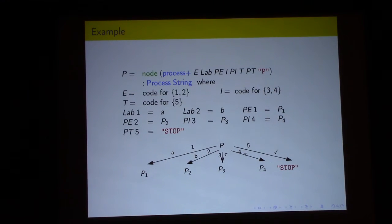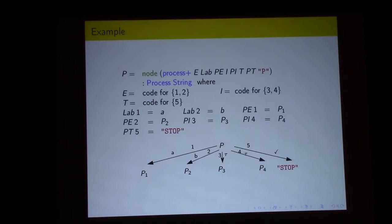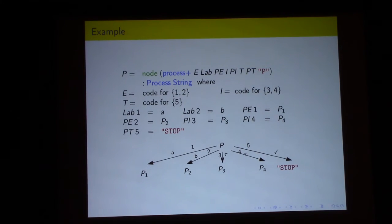To explain how a process progresses: process P has an external choice set of one and two, an internal choice set of three and four, and a termination event set of five. We have labels A and B, and next processes P1, P2, through STOP. If P proceeds with external choice one it performs event A and the next process is P1. With external choice two it performs event B and next process is P2. For internal choice four, a Tau event (silent transition representing an internal event) is performed and next process P4 follows.